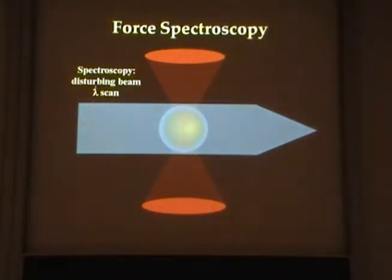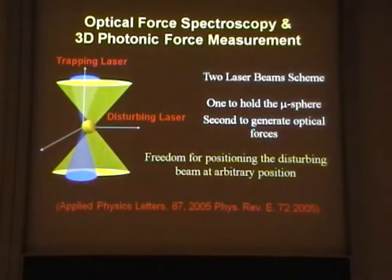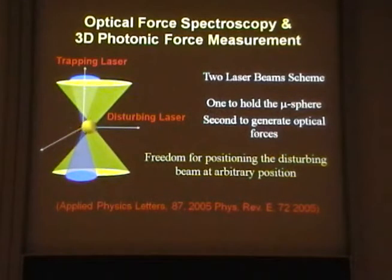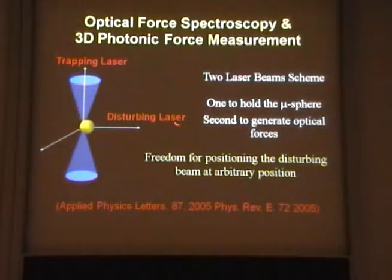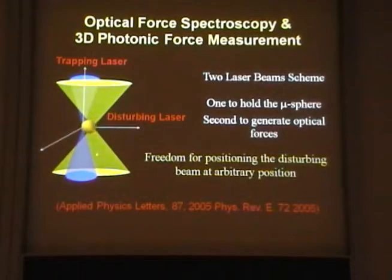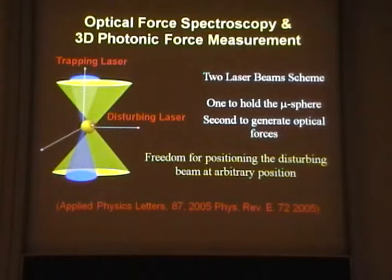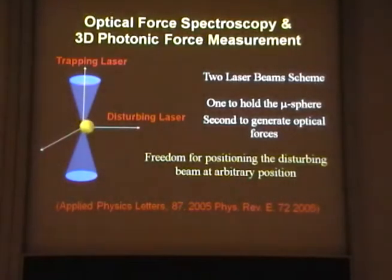To perform spectroscopy, what we need is to have this disturbing beam scanned and changed with the wavelength. So what we did was use two lasers — a Ti:sapphire tunable CW Ti:sapphire laser and a Nd:YAG laser. We said that the Nd:YAG laser was to keep the particle in the trap, and the other one would change its position via the force on the particle. One nice thing is that we have complete freedom to position our trap for the second beam in any place relative to the other beam.